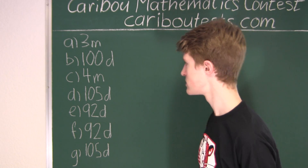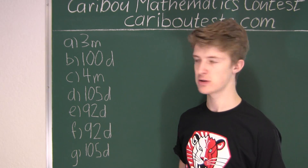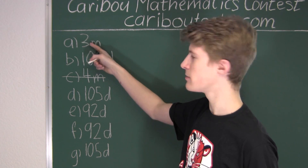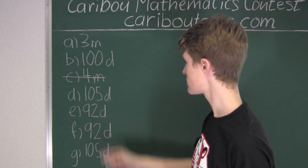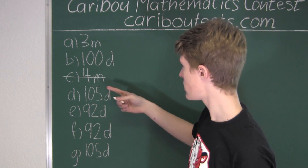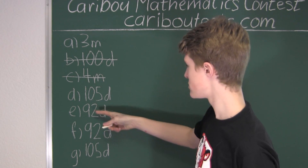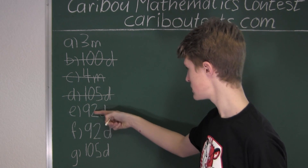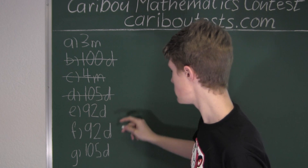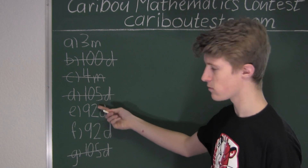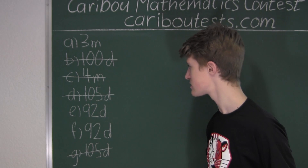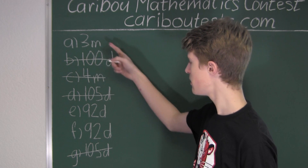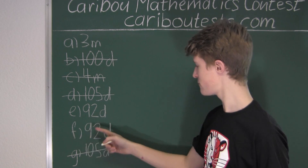So here are the options. We can already cross out some. We can cross out C, 4 months, because we already have A which is 3 months, and 3 months is less than 4 months. We can cross out 100 days, because 92 is less. Then we can also cross out D, 105 days, because 92 days is less. And finally, we can cross out G, 105 days, because again, we have 92 days.